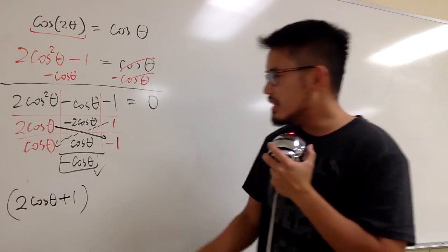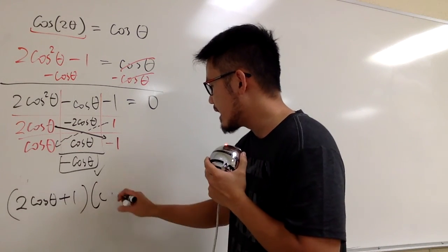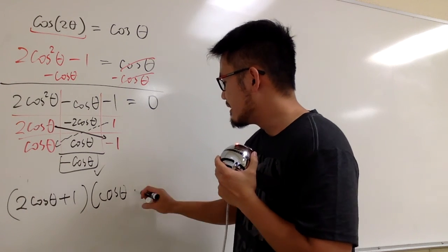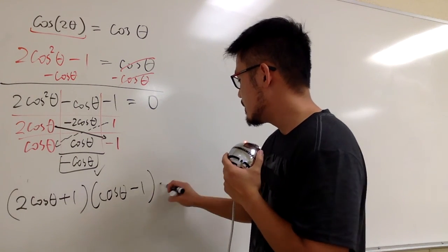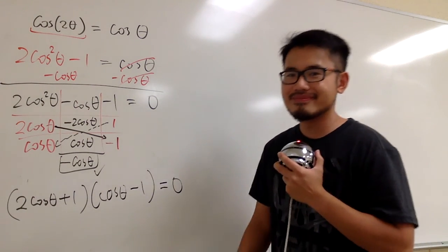And then, the second factor is going to be cosine θ minus 1. Okay, and this is equal to 0.